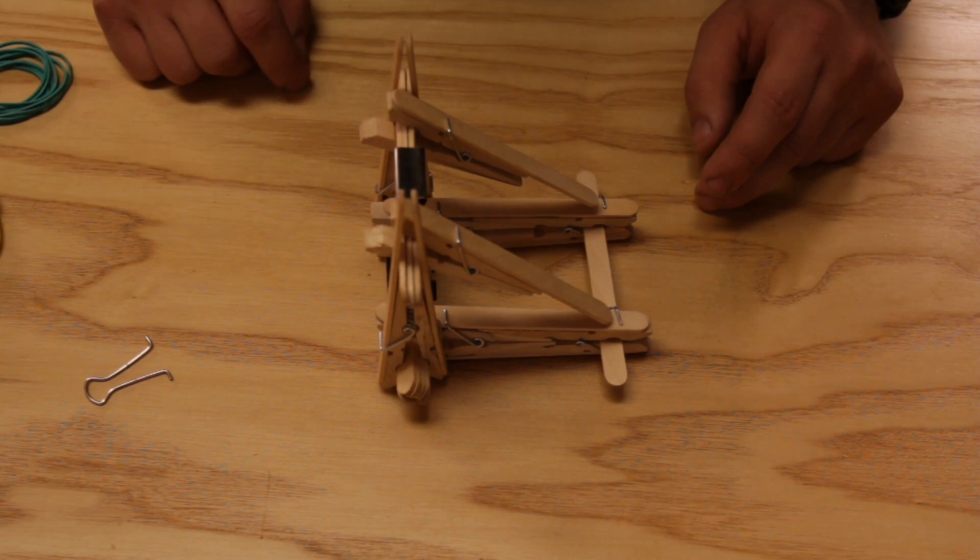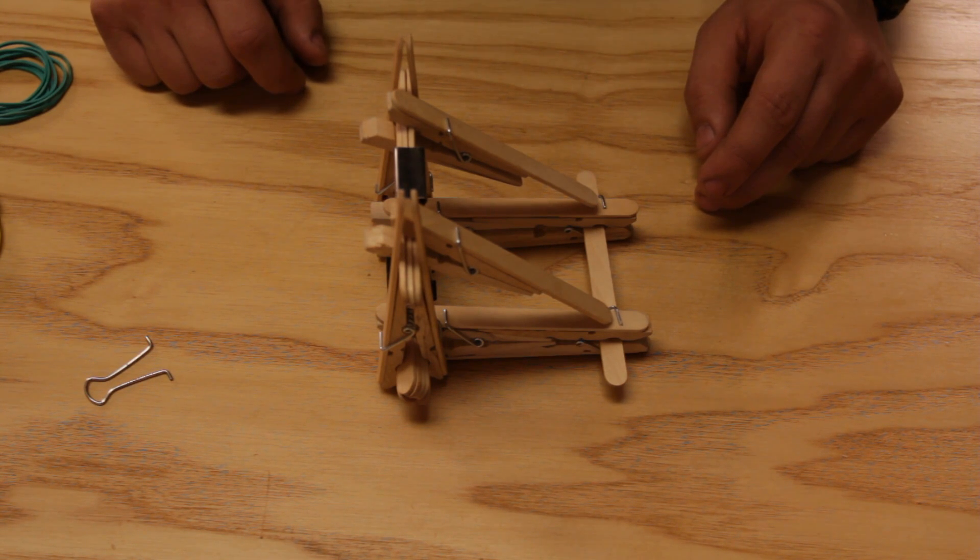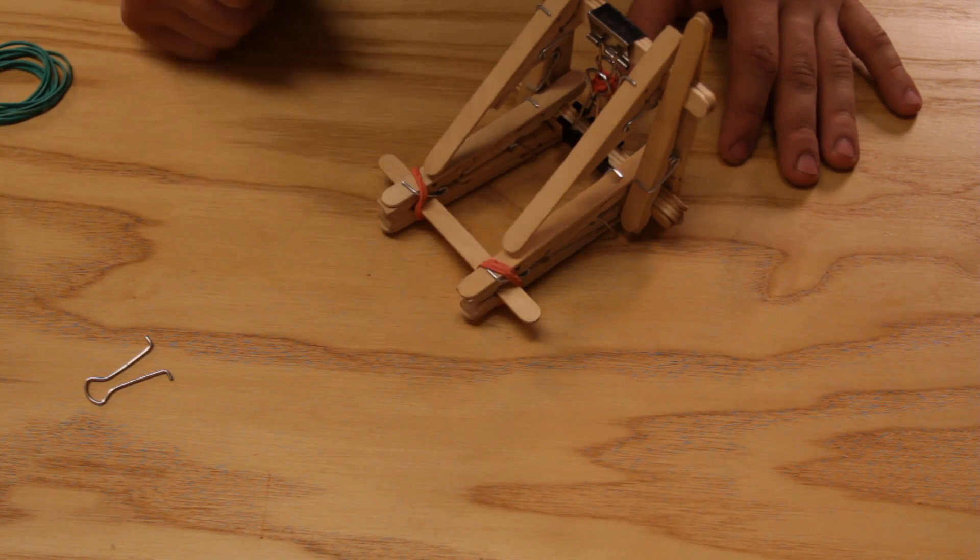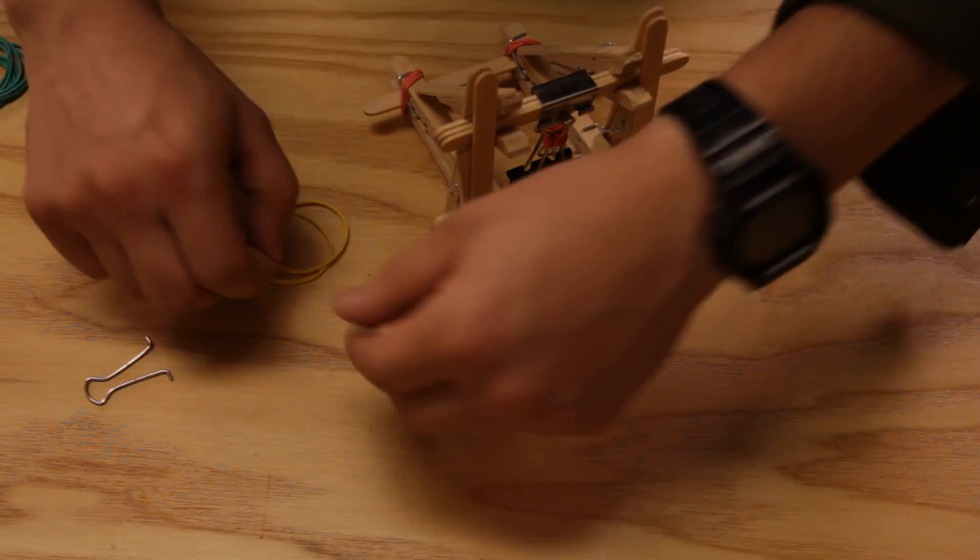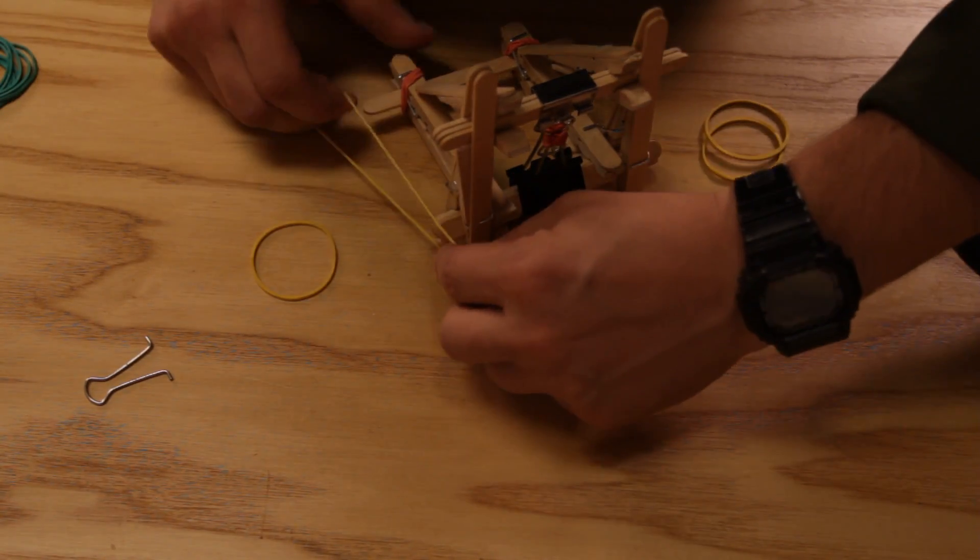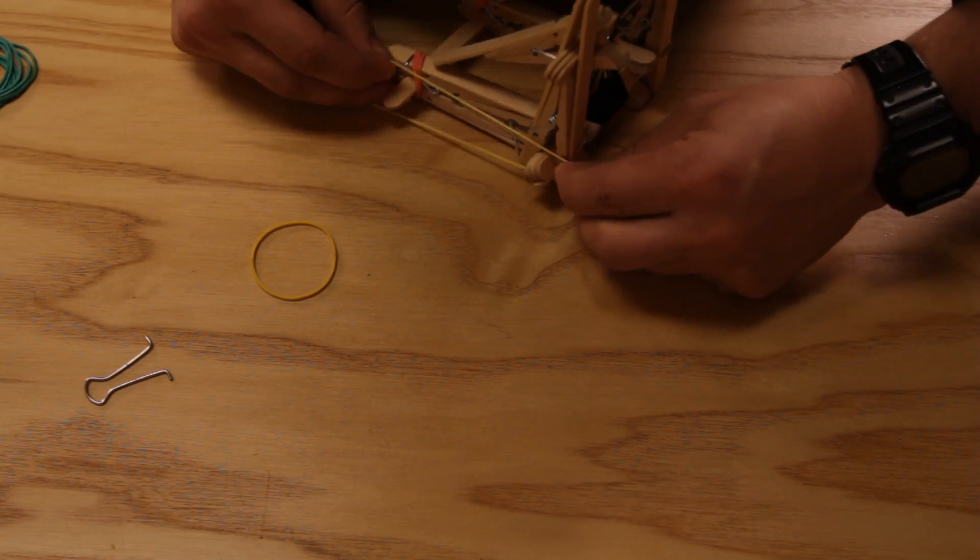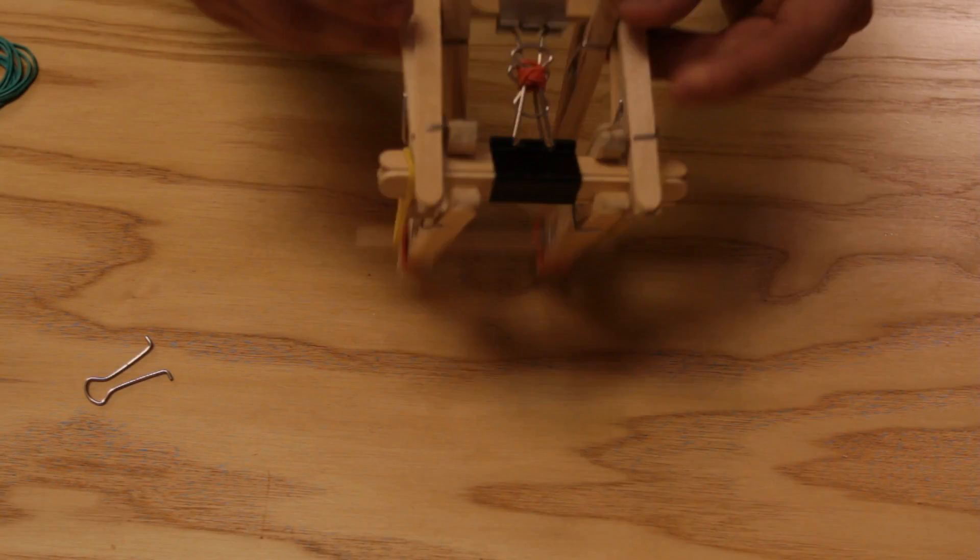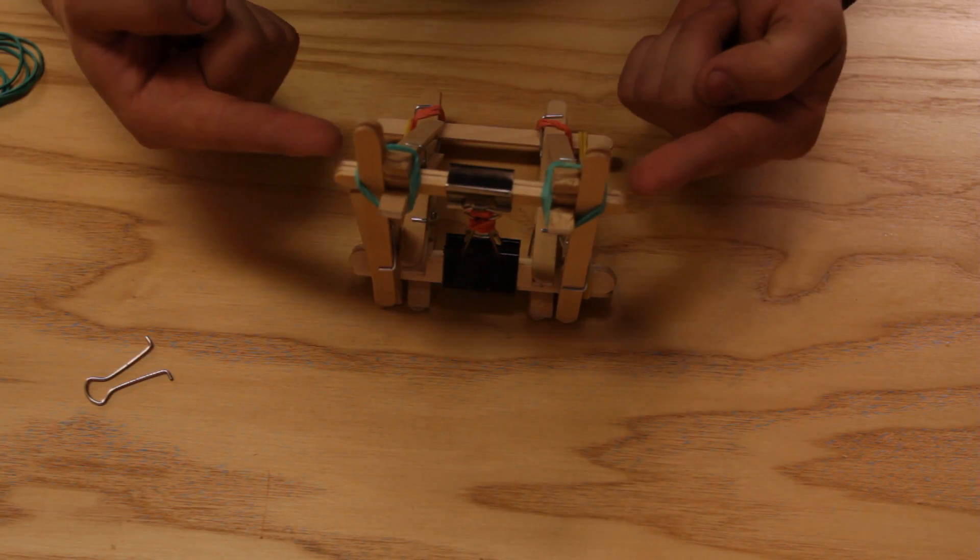Next thing is we're going to take rubber bands and attach all the loose points. As you're building this at home you will notice which parts are loose. Feel free to be very liberal with the rubber bands and put them wherever you want. There's no such thing as having too many rubber bands. Add two rubber bands to here and here in the back. We're going to add two rubber bands on each side to the sides. Now it should look like this. Two rubber bands in the front.